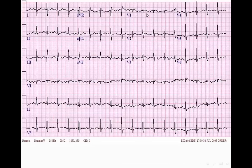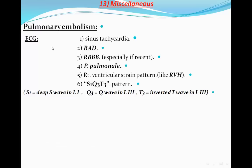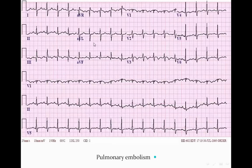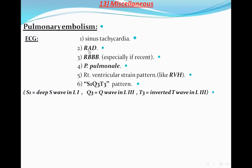There are also inverted T waves in the right precordial leads with a tall R in V2. This is a case of pulmonary embolism. The ECG of pulmonary embolism will show sinus tachycardia, which is a very important sign, right axis deviation, right bundle branch block sometimes, P pulmonale, right ventricular strain as in RVH, and the S1Q3T3 pattern. S1 means deep S wave in lead 1, Q3 means Q wave in lead 3, and T3 means inverted T wave in lead 3.